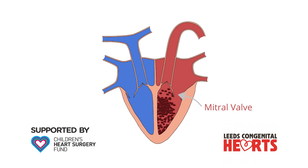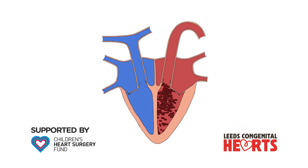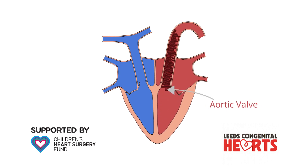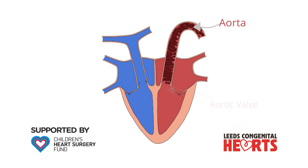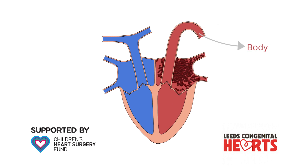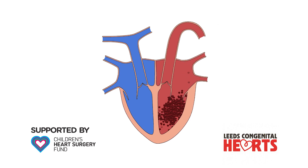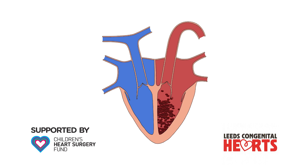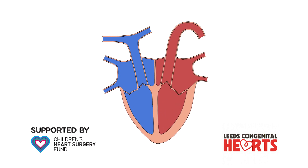The left ventricle then pumps blood through a further one-way valve, the aortic valve, to a large artery called the aorta. From the aorta, blood flows around the entire body. So, the left side of the heart takes blood that is high in oxygen from the lungs and pumps it to the body.